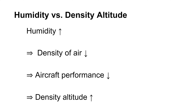Finally, there is humidity, which is the amount of water vapor in the air. Water vapor has less mass than air molecules but occupies relatively the same amount of space. This means that increases in humidity will produce less dense air and the performance of the aircraft goes down. Thus, humidity is inversely related to aircraft performance and positively related to density altitude.